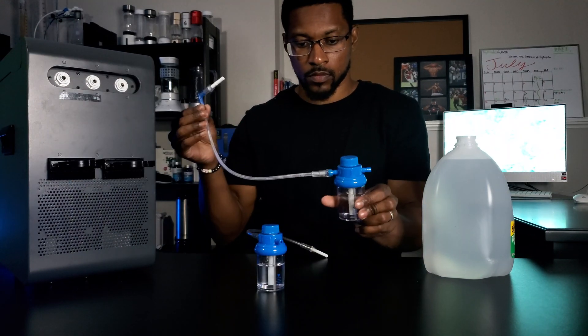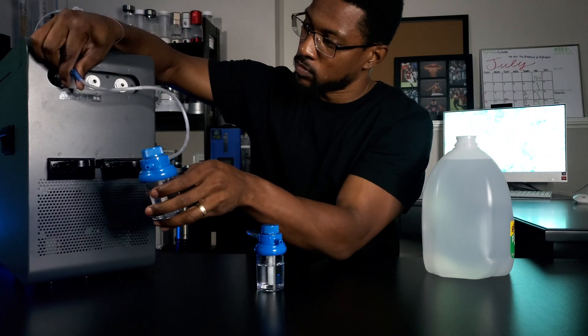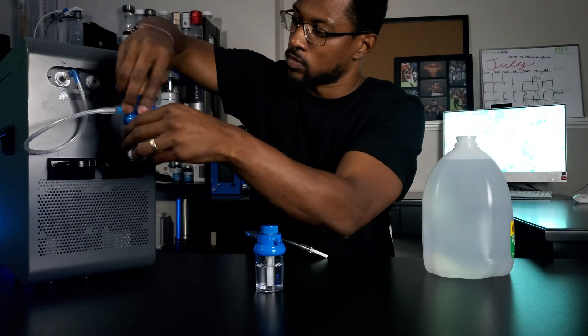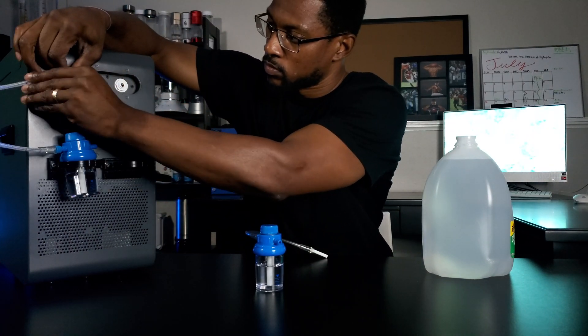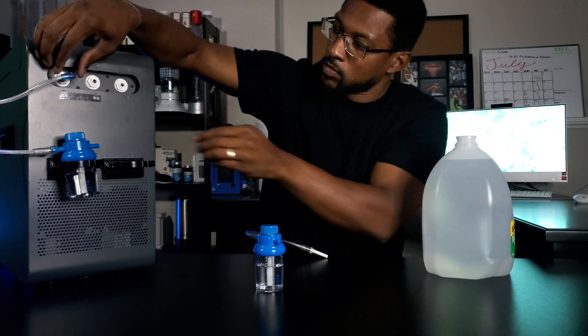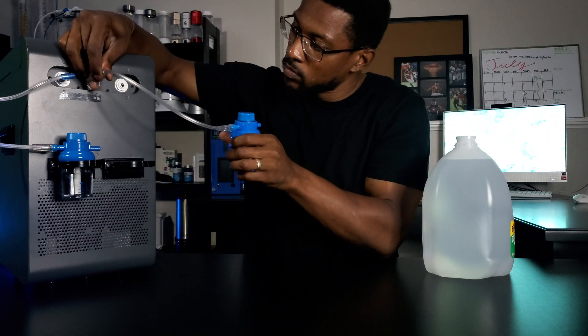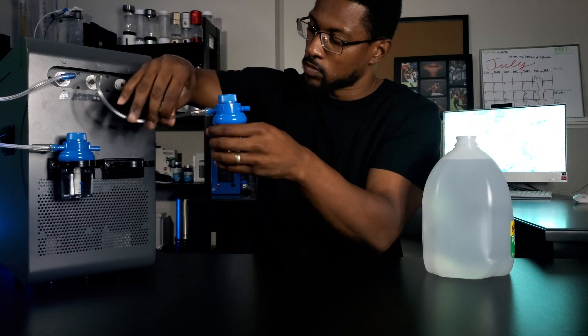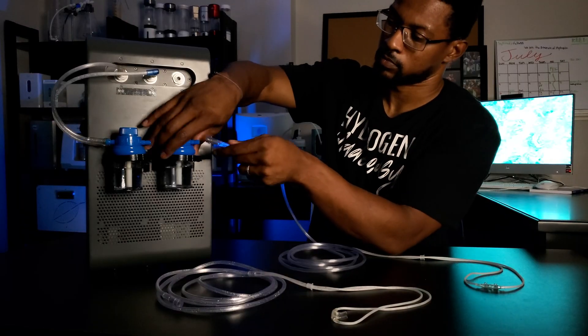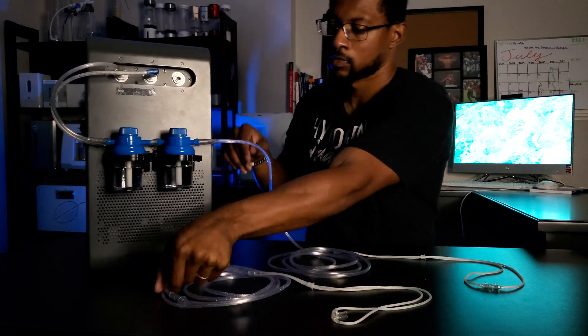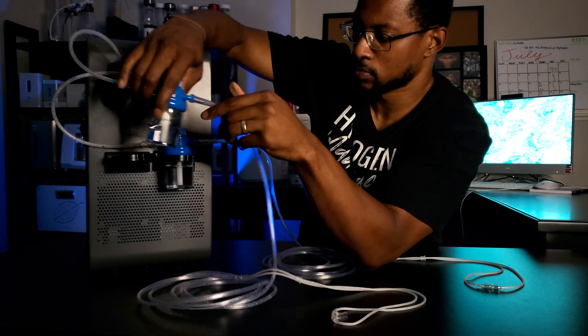For dual user use you would begin the same way by filling up your humidifier cups with water. Then take the provided tubing for dual user use, connecting the H2 port to one humidifier and the dual user port to another humidifier. After that you will connect both provided cannulas to the humidifiers for breathing hydrogen gas.